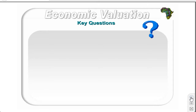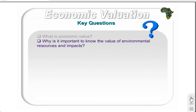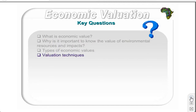The fifth chapter discusses the theory and application of economic valuation of natural resources and environmental impacts. The key questions that will be addressed over the next few days are: What is economic value? Why is it important to know the value of environmental resources and impacts? What are the types of economic values, valuation techniques, and applications of valuation techniques?